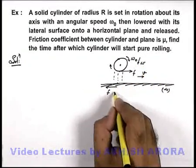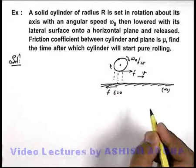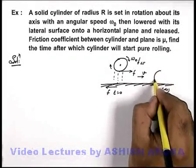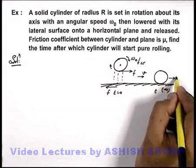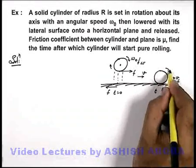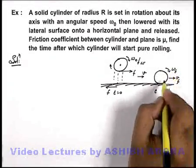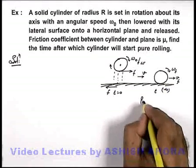And say if it is lowered at t equal to zero, we talk about the situation after time t. Then after time t say its speed is vf and its angular speed is omega f, and say it starts pure rolling.